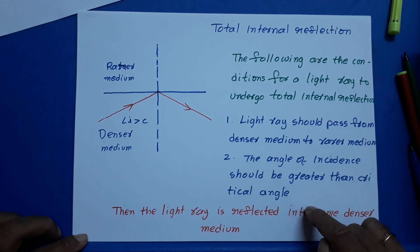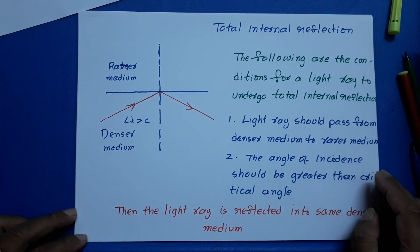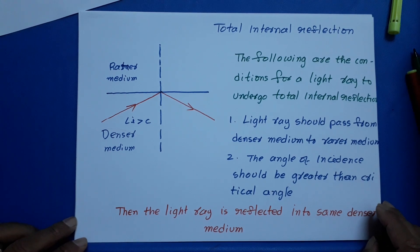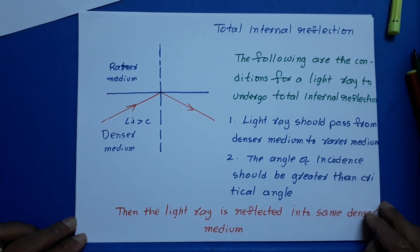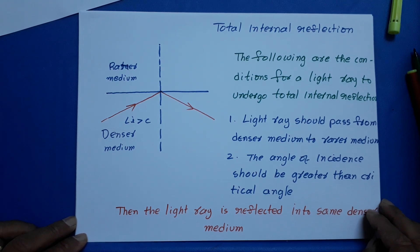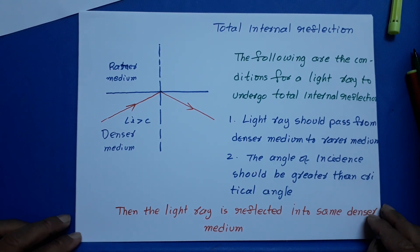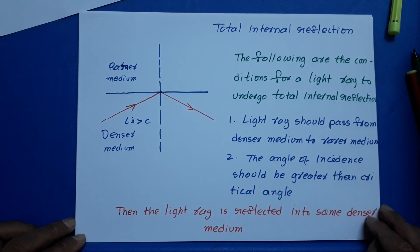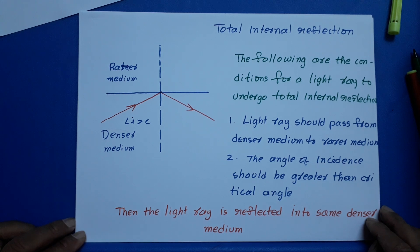This phenomenon is called total internal reflection. There are so many applications to total internal reflection: the formation of mirages, optical fibers, and brilliance of diamond. All these are different applications for total internal reflection. I shall explain those applications in the next class.